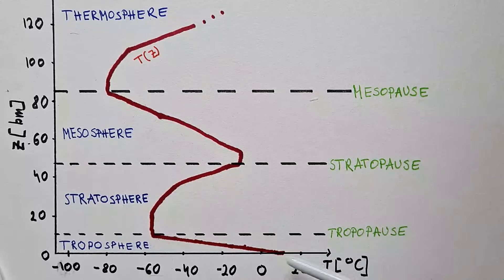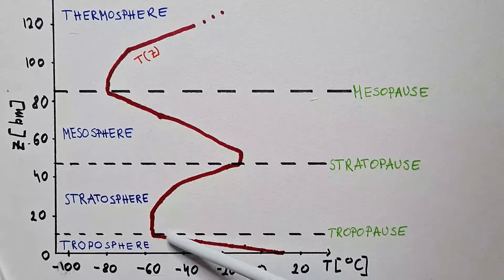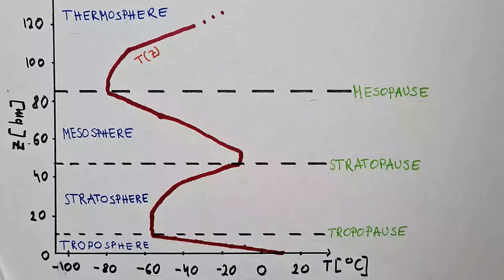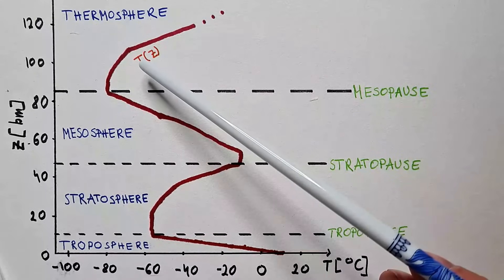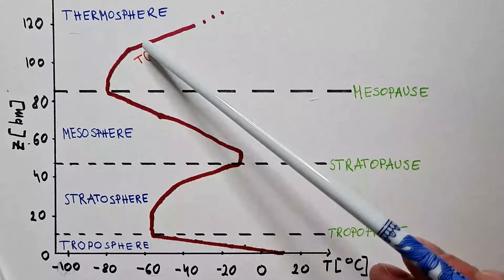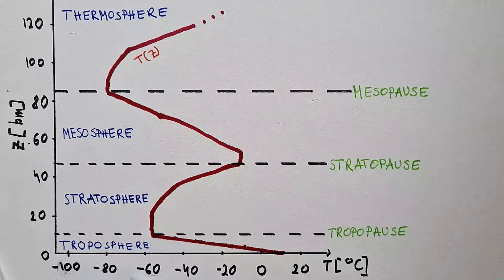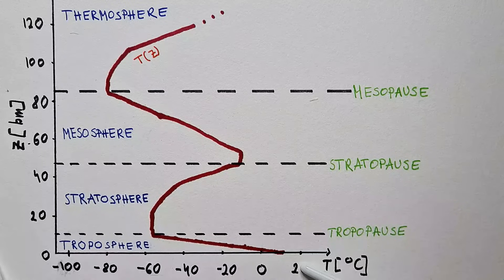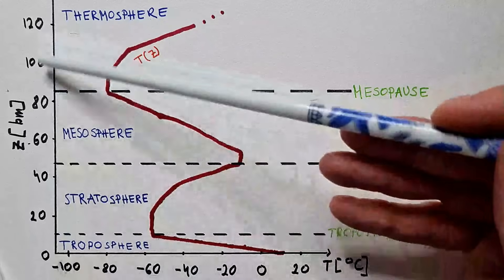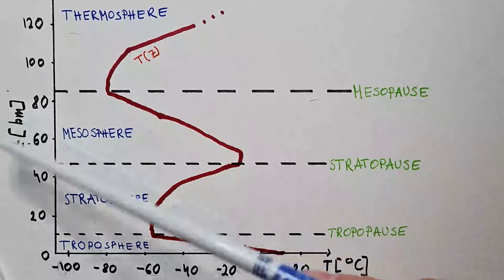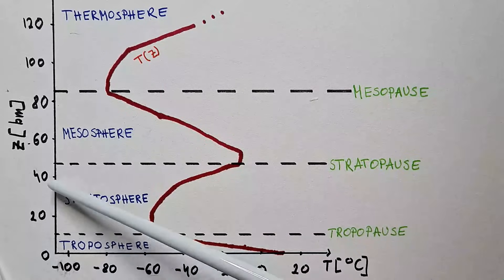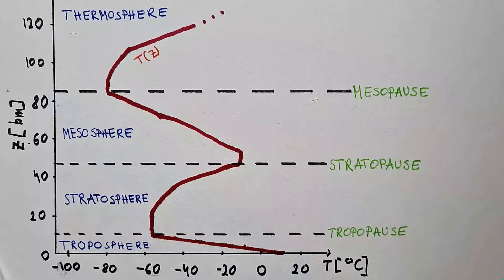This figure shows how temperature changes with height in our atmosphere. The temperature profile is represented with a thick red curve. The x-axis is temperature in degrees Celsius, every 20 degrees from minus 100 to plus 20. The y-axis is height in kilometers and the increment is 20 kilometers, as you can see.